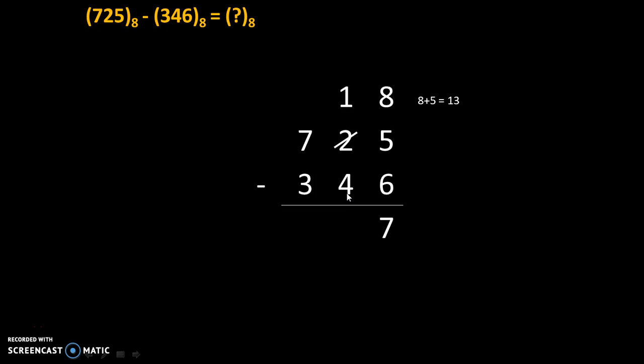Now we cannot subtract 4 from 1 because 4 is a bigger number. That's why we will take borrow from the next number. Therefore this 7 will become now 6 and that borrow will be taken as 8. And 8 plus 1 is 9 and that 9 minus 4 will give us 5.